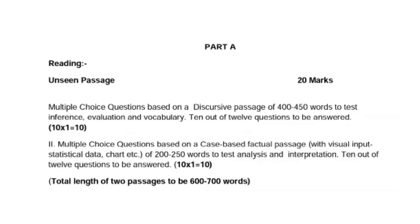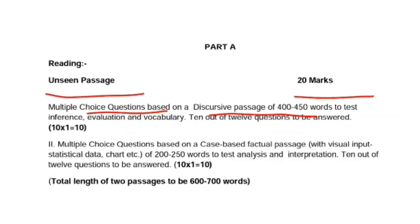Your Part A covers reading, and both literature and unseen passages will be asked. The unseen passages will carry 20 marks. The first question will be multiple choice questions based on a discursive passage — where you have to read, think, analyze, and then write the answer. You have to attempt 10 out of 12 questions, and every answer carries one mark.